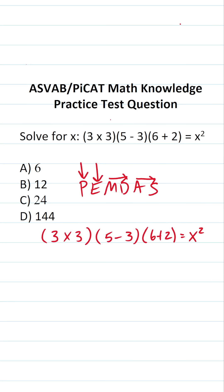Let's start with what's in parentheses. We have 3 times 3, which is 9; 5 minus 3, which is 2; and 6 plus 2, which is 8. So we have 9 times 2 times 8 equals x squared.